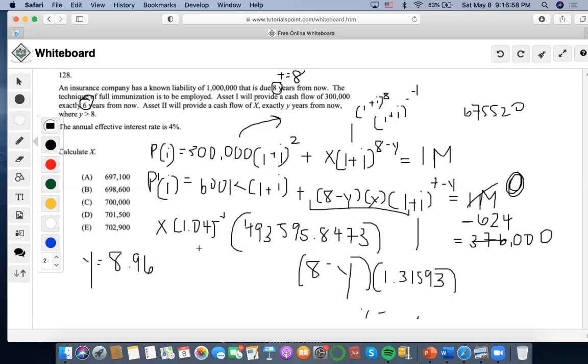Now, I'm able to plug it into either of these equations. I'm going to plug into this one. So again, I simplified this, made this to the other side, 675,520. Now, I'm going to do 1.04 to the minus 8.96, 0.96, which is 0.96, and then I'm going to get x, which will equal to 701 or 7.04, which would be closest to answer choice d.